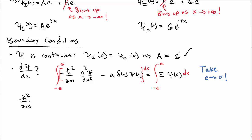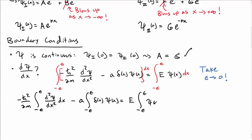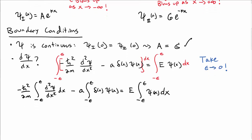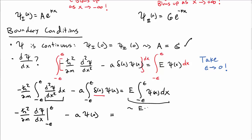Let's write out each term. The first term is minus h-bar squared over 2m times the integral from negative epsilon to epsilon of the second derivative of psi dx. Then we have minus A times the integral of delta of x times psi of x dx, and that equals E times the integral of psi of x dx. The first term gives the derivative of psi evaluated at the boundaries. The second term gives A times psi of 0, since the integral of the delta function is 1. The right-hand side is approximately E times psi at 0 times 2 epsilon, which goes to 0 as epsilon goes to 0.